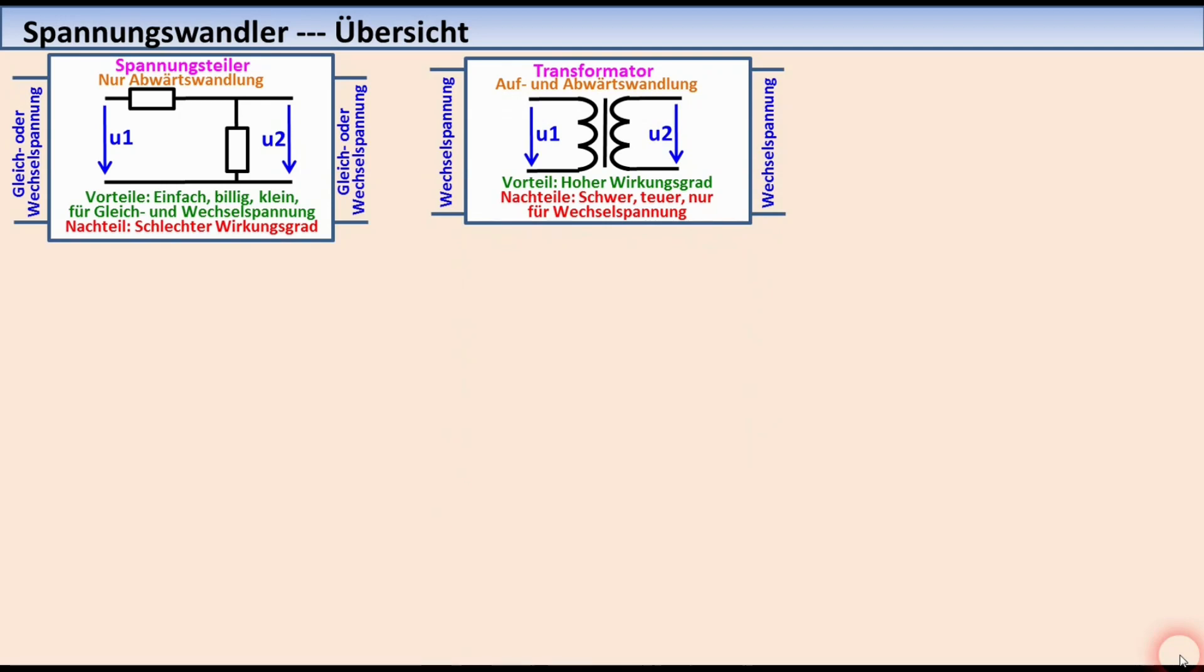Herkömmliche Transformatoren, bei denen infolge der magnetischen Kopplung über einen gemeinsamen Magnetkern durch das von der Primärspule erzeugte Magnetfeld eine Spannung in die Sekundärspule induziert wird, sind nur für Wechselspannungen geeignet. Sie können aber hoch- oder runter-transformieren.